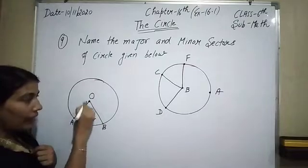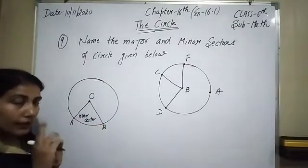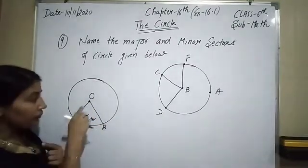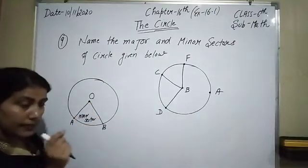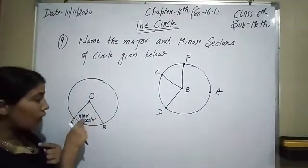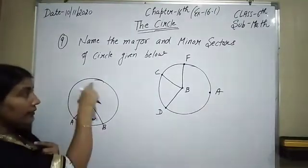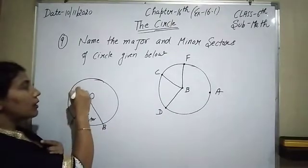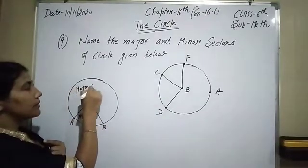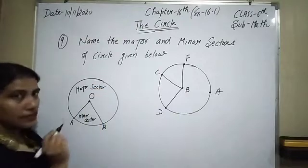Here are the two radii OA and OB. When the area is enclosed with the two radii, the smaller one is called the minor sector and the bigger one is called the major sector.